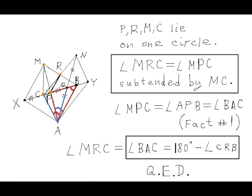And since CRB is a supplementary angle to angle MRC, and two angles BAC and CRB are subtended by the same segment CB from two opposite sides, we obtain that points A, B, C, and R lie on one circle, which is what we needed to demonstrate.